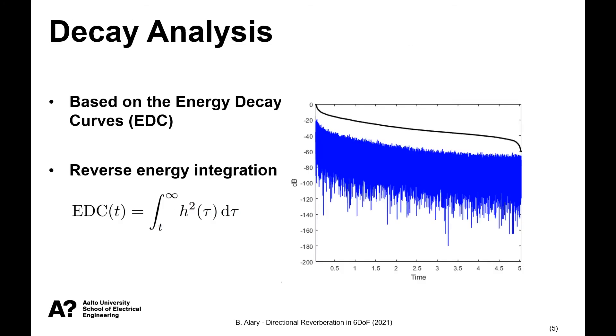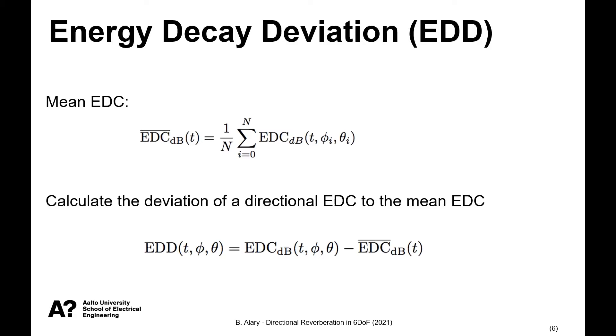To characterize the directional reverberation, we rely on a pre-existing method for analysis of mono impulse response, namely the energy decay curve. This consists of calculating for any given moment in time in the impulse response, the total amount of energy remaining in the decay. In the case of a spatial impulse response, we want to perform the EDC analysis on a set of angle-dependent directional impulse responses, which can be extracted from the ambisonic signals. And then we want to calculate the mean EDC curves at all directions, and this allows us to calculate the deviation of each angle to this mean.